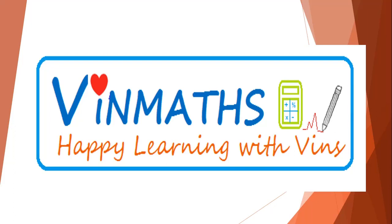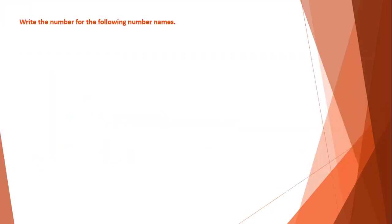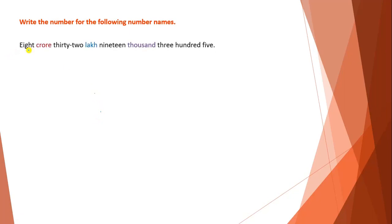Namaste students, welcome to Win Maths. In this video we are going to learn to write the number for the given number name. Let's take a problem. They are given: 8 crore 32 lakhs 19 305. To write this given number name in figures, first we need to draw the Indian place value chart table.